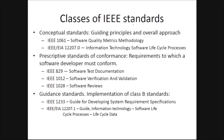So these are the classes of IEEE standards. First of all, the conceptual standards — that is for guiding principles and overall approach — we have IEEE 1061, which is for software quality metrics methodology. Then a very important one: IEEE/EIA 12207.0, which is for information technology software lifecycle processes.